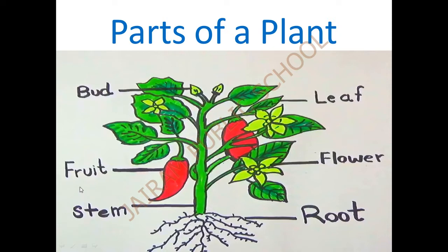Next is fruit. We get the fruit from the plants as well as from the trees also. The spelling is F-R-U-I-T, fruit. Fruit is very tasty and delicious. Here it is the chili, but in other plants we get many fruits and vegetables also, very sweet and tasty. First one is bud, second one is fruit.